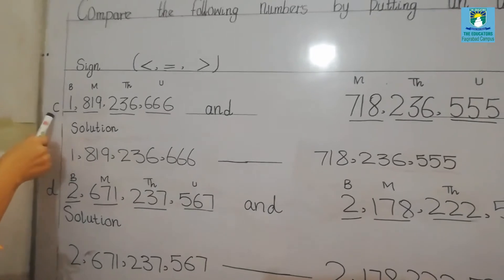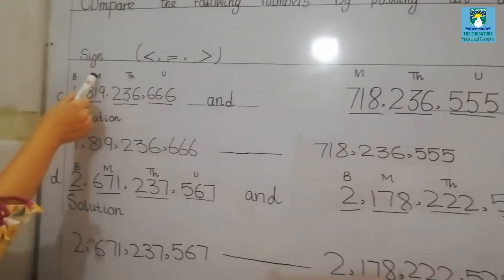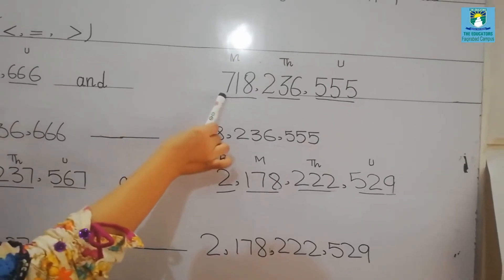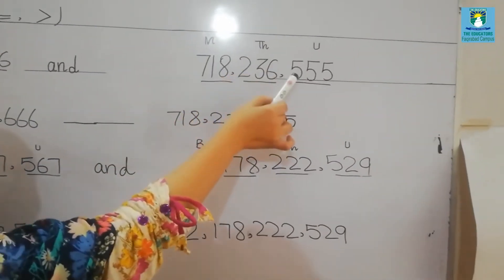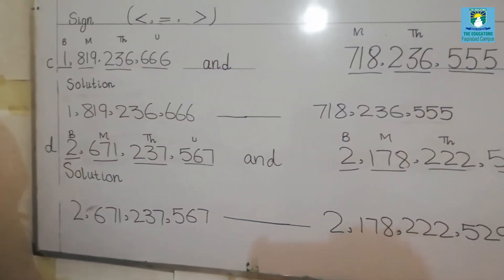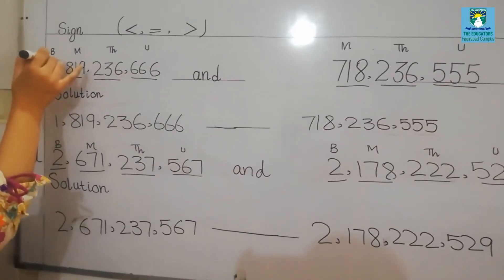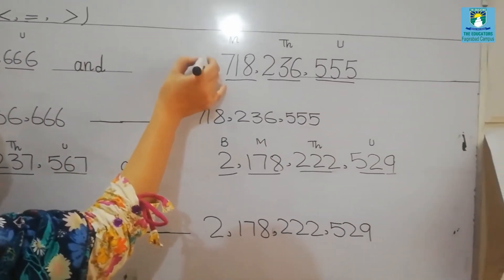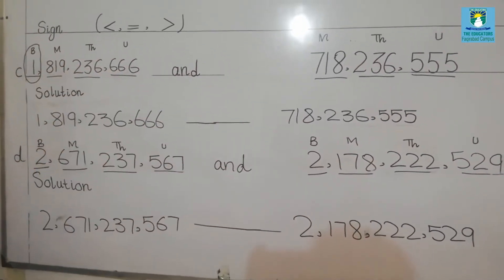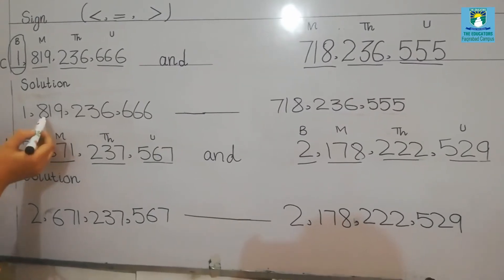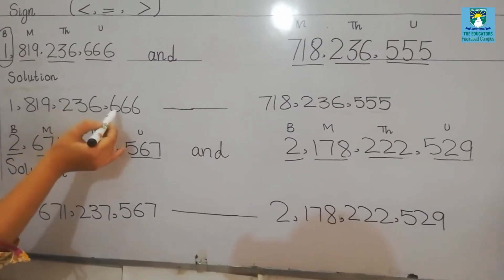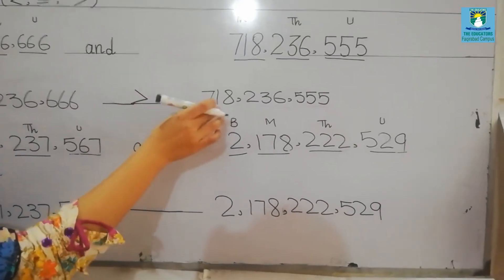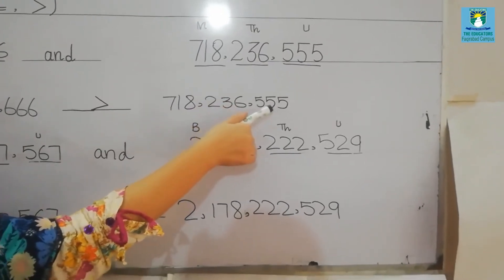Now let's move to Part C. The first value is 1,890,890,236,666 and the second value is 718,236,555. In the first value we have billions, but if we compare the billions in the second value, there are no billions. So the first value is greater than the second value: 1,890,890,236,666 is greater than 718,236,555.